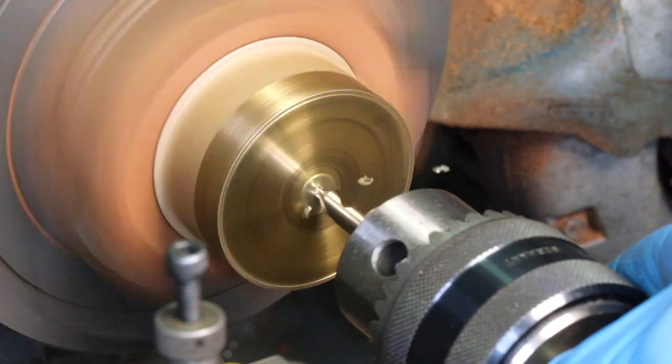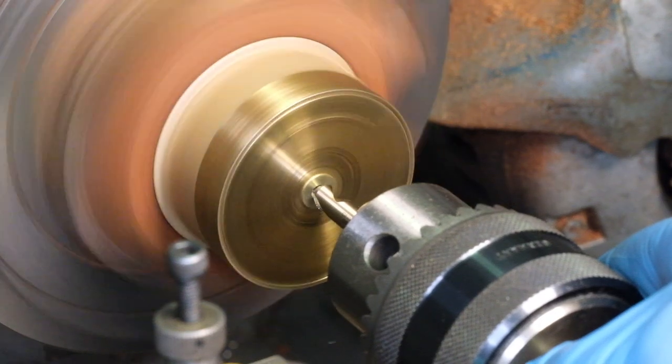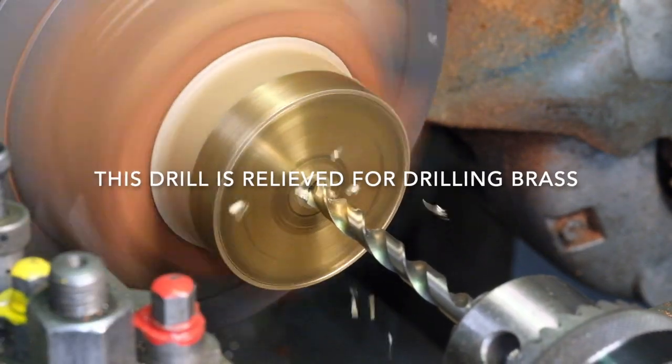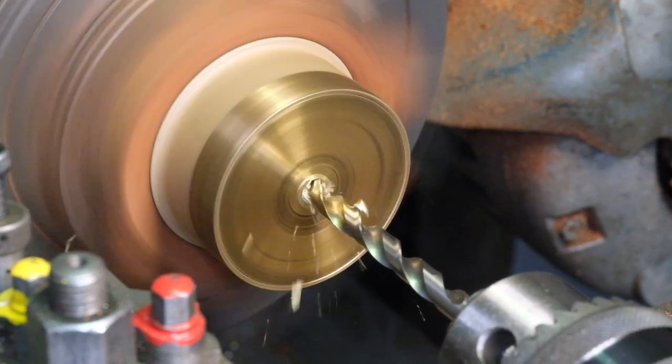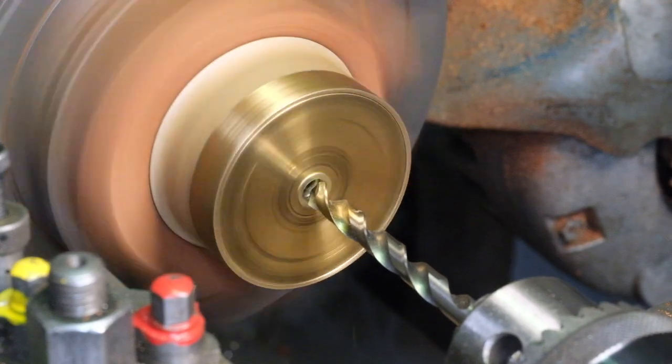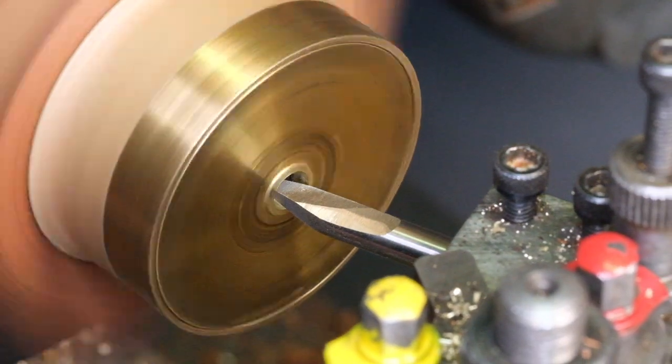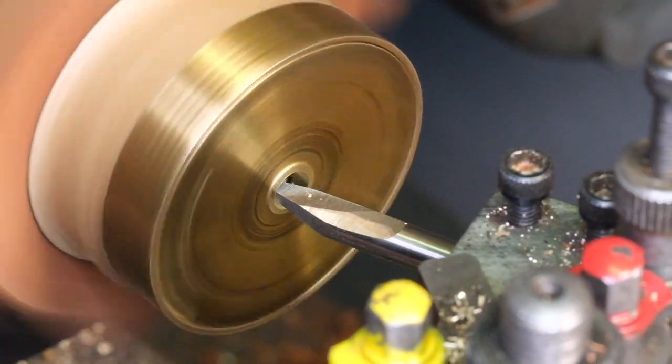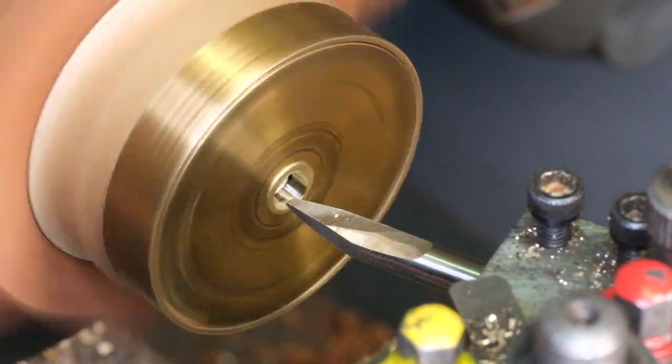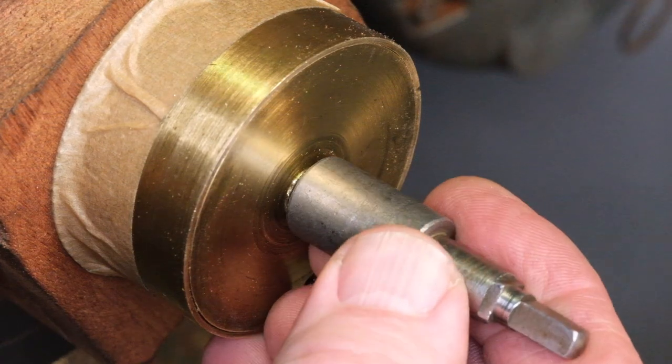I center drill, drill, and again maybe I would advise you to bore only after drilling with a small drill, otherwise it's likely to grab and pull the work out of the chuck. I bore it very slightly undersized. You don't want to bore to size because the finish from the boring tool isn't really good enough.